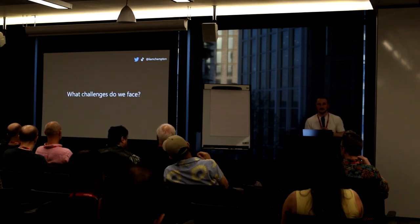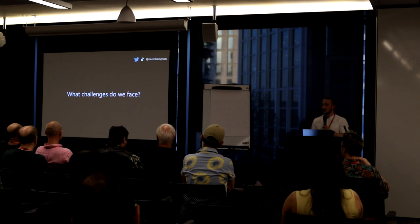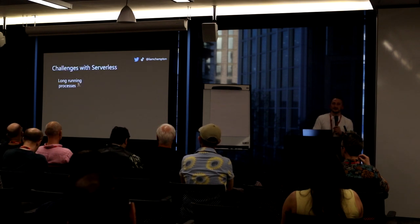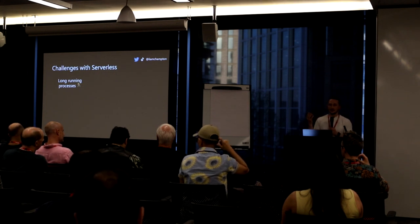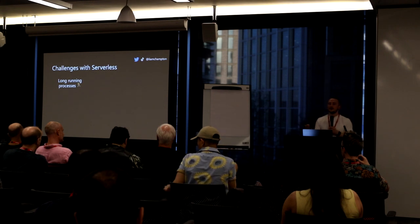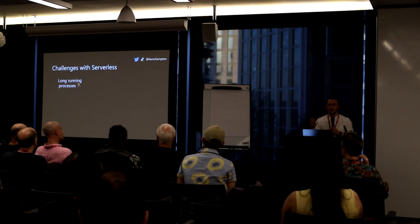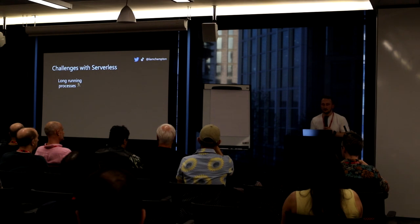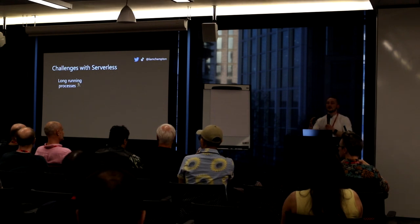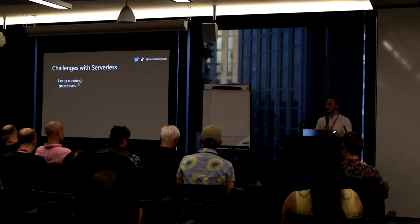So what challenges do we face? Long running processes is something I found to be a big sticking point. Engineering teams with products executing for more than 10, 15, or 20 minutes — that's a problem. In Azure, the maximum time you can run a function is 10 minutes and the default is five. That's the hard stop. You don't want functions running for a long time — that's inefficient with your costing. With Lambda, I believe the absolute max is 15 minutes. Again, you don't want it taking that long.